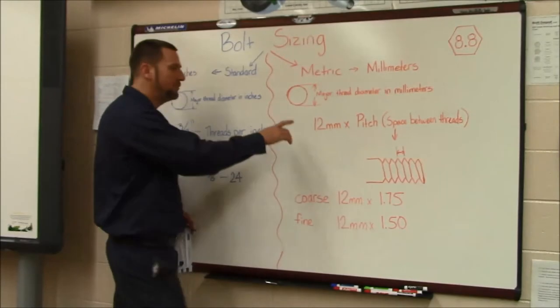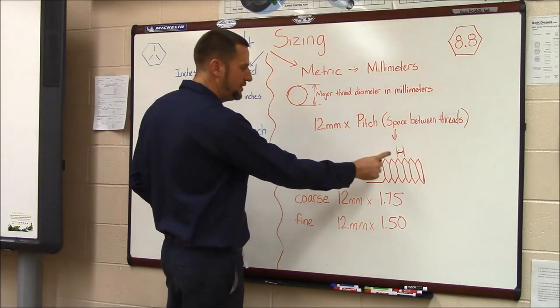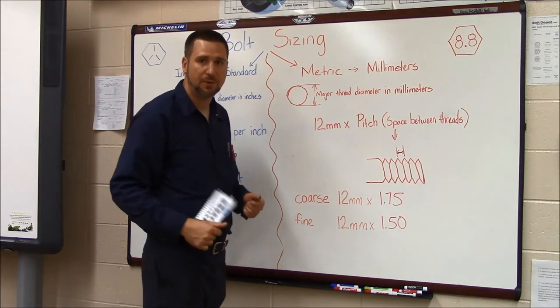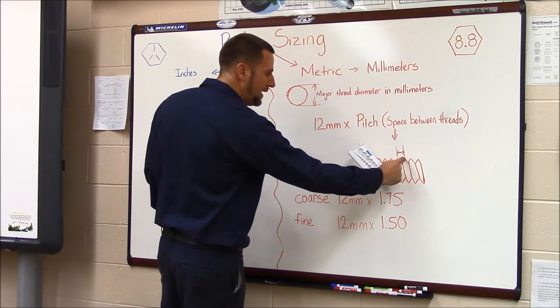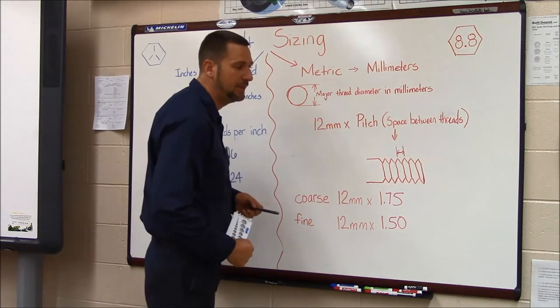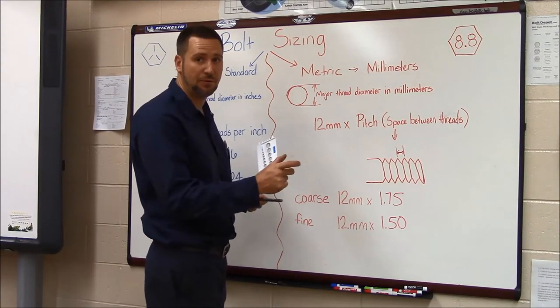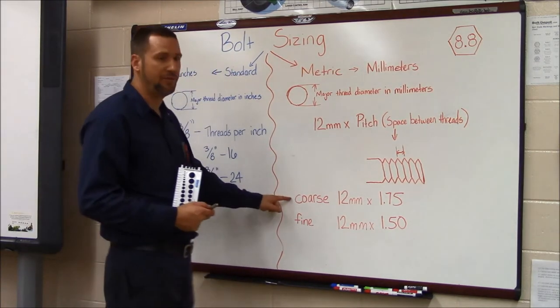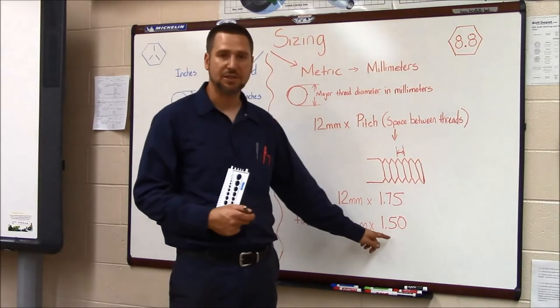So the second number that we concern ourselves with metric bolt sizing is called pitch, and pitch is the space between each thread. So these two 12mm bolts have a possibility of having thread spacing of 1.5mm or 1.75mm apart. The 1.75mm bolt is going to have thread spacing that's further apart, or the word we like to use when we're looking at threads is coarse. The bolt that has closer spacing or fine spacing is going to be 1.5mm.